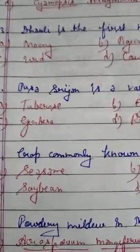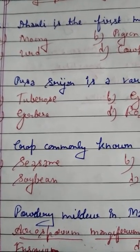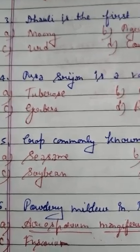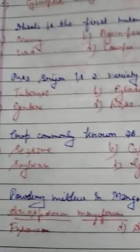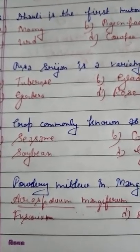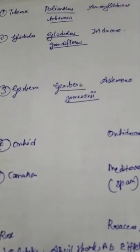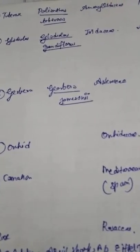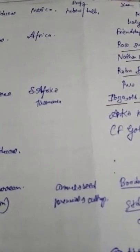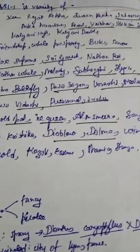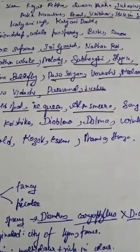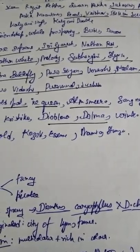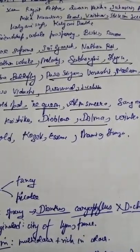Question number 4: Pusa Srijan is a variety of — option A tuberose, option B gladiolus, option C gerbera, option D rose. For tuberose: scientific name is Polianthes tuberosa, family Amaryllidaceae, origin Mexico. Propagation is by tubers or bulbs. Important varieties are Rajatrekha, Suwalnareka, Subhashini, Arka Nirantar, Vahabhau, Sikkim Selection 1, Kalniani Single, and Kalniani Double.